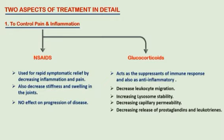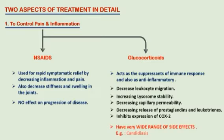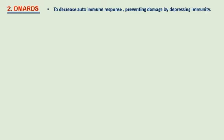The second drug is sulfasalazine. Sulfasalazine is metabolized to sulfapyridine and 5-aminosalicylic acid. Sulfapyridine is the active moiety in rheumatoid arthritis, while 5-aminosalicylic acid is useful for ulcerative colitis. Sulfasalazine is also used in patients when methotrexate is contraindicated.